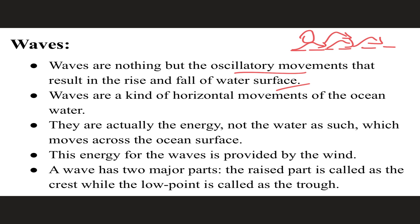Waves are a kind of horizontal movement of ocean water. They are actually the energy, not the water itself, which moves across the ocean surface. This energy is generated by the wind, or the running air. So waves are a form of energy, and this energy for the waves is provided by the wind.